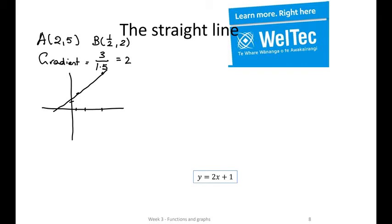We could read off that actually that was going to go through 1 there, so that we know that our y-intercept equals 1. So that would now give us enough information. We need to fill out that y is equal to mx plus c, y equals 2x plus 1.